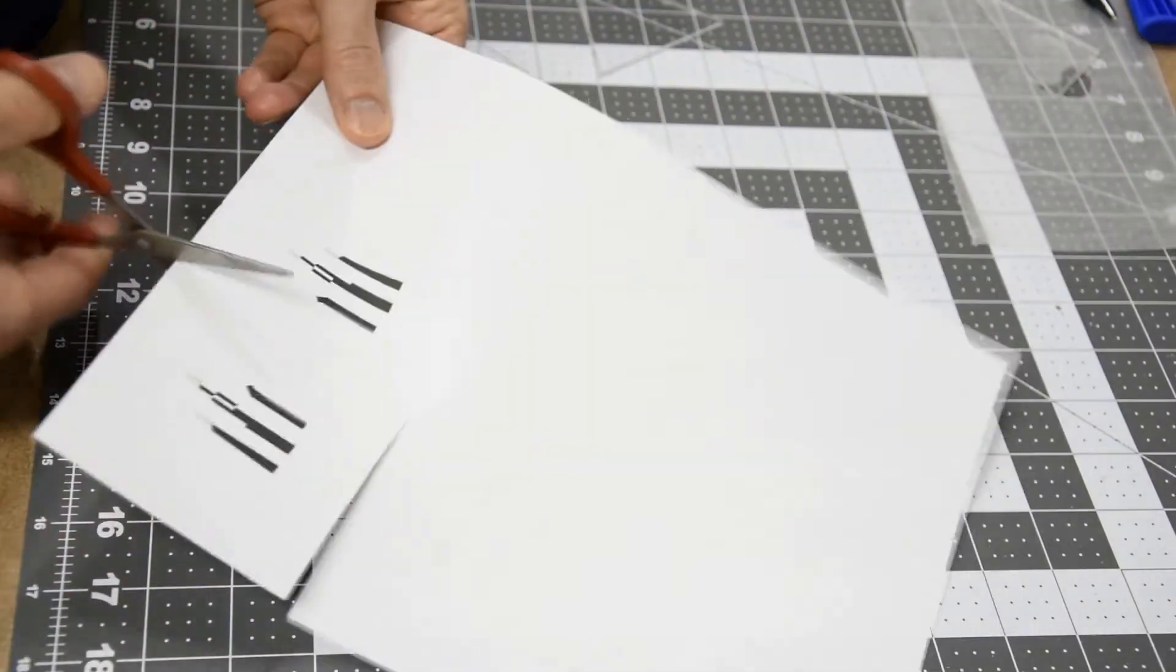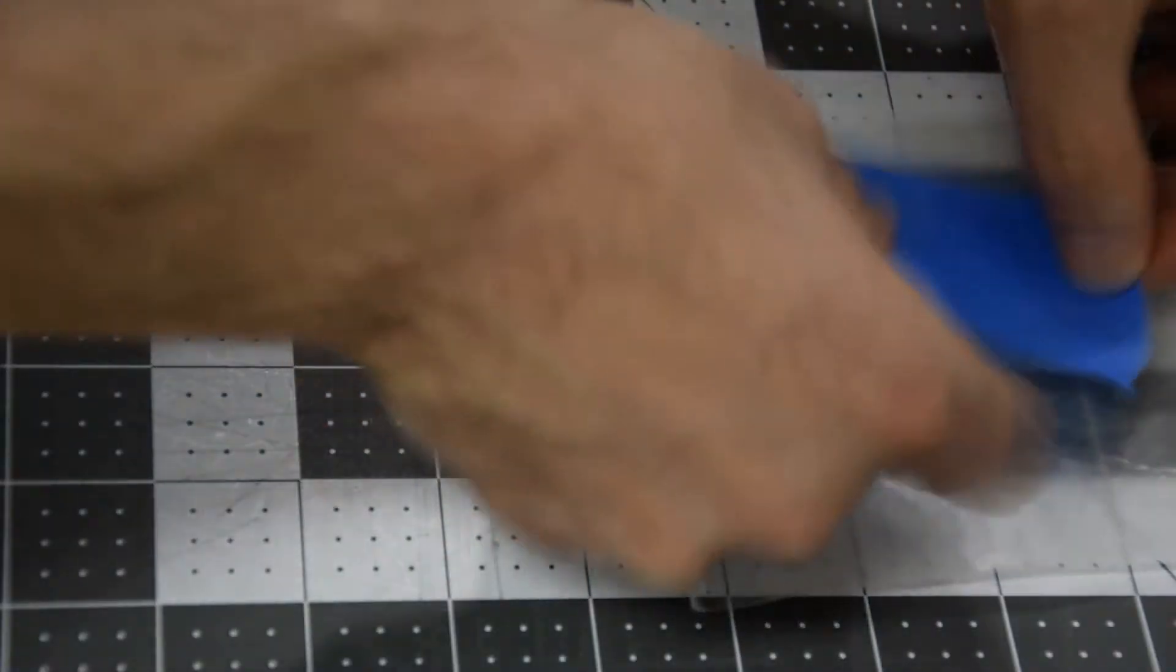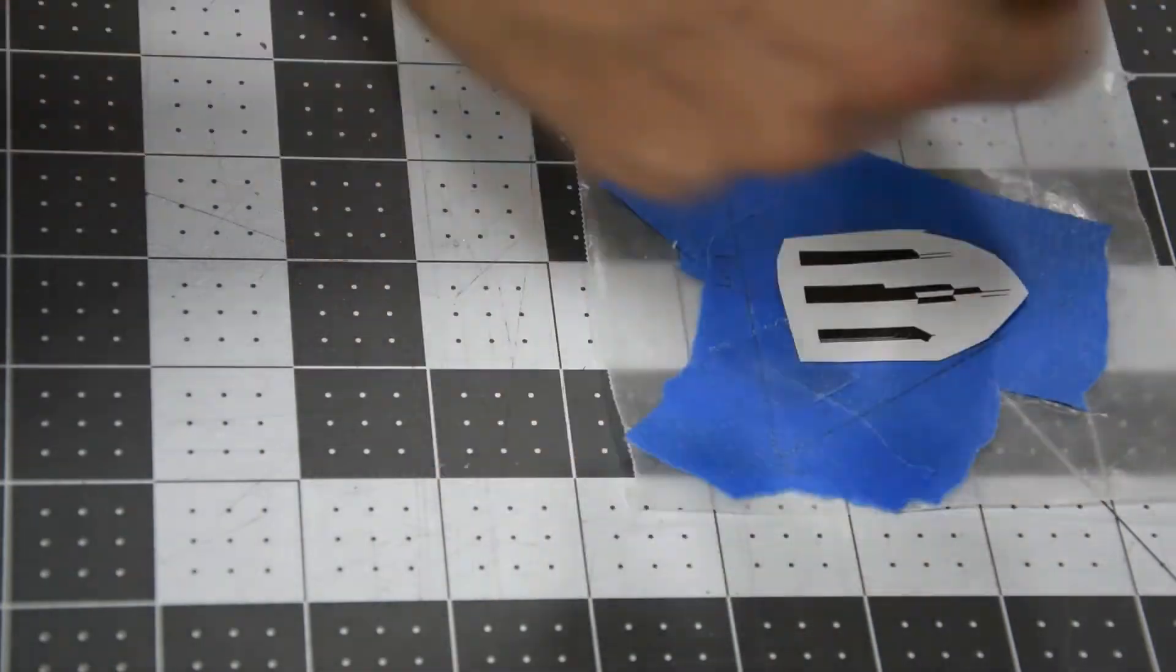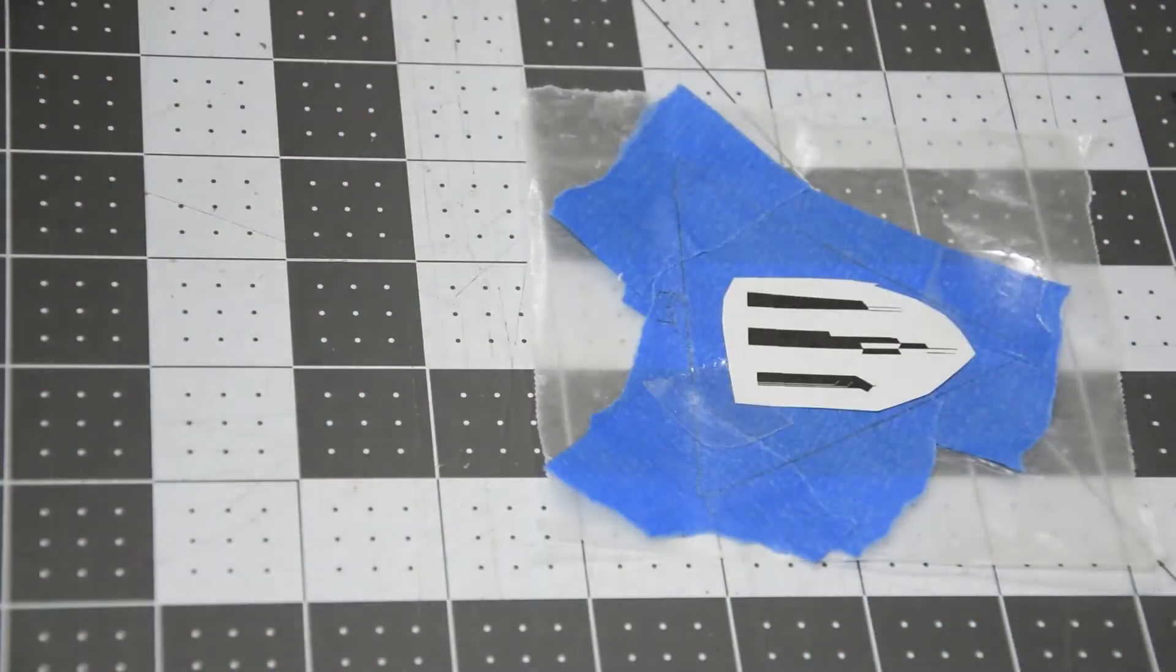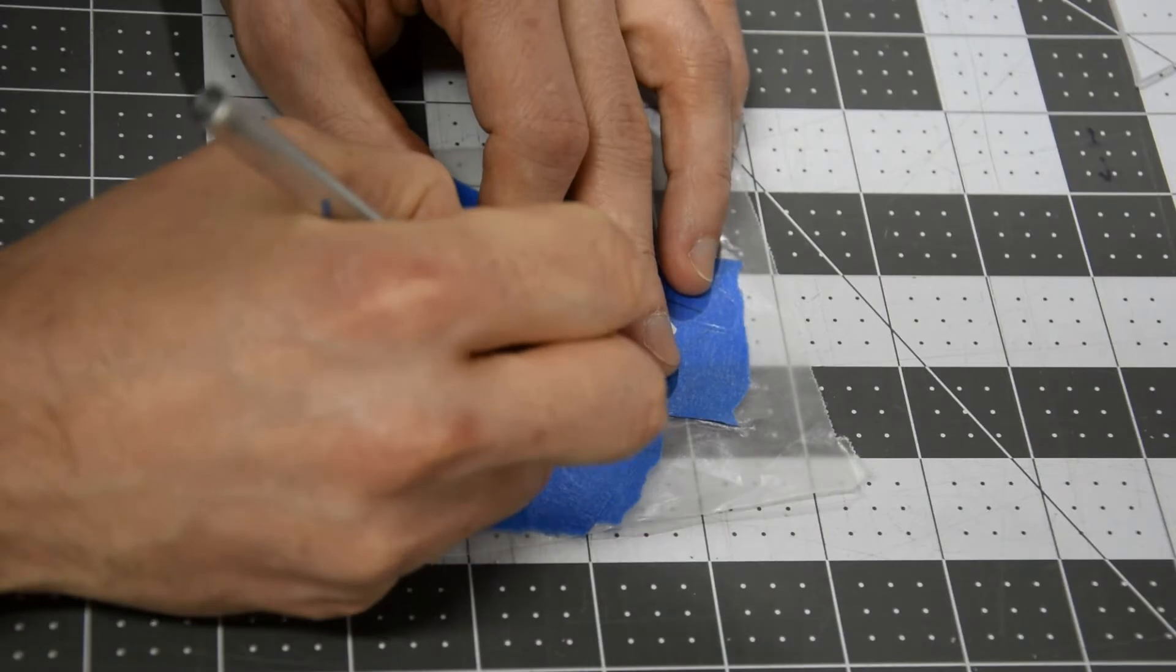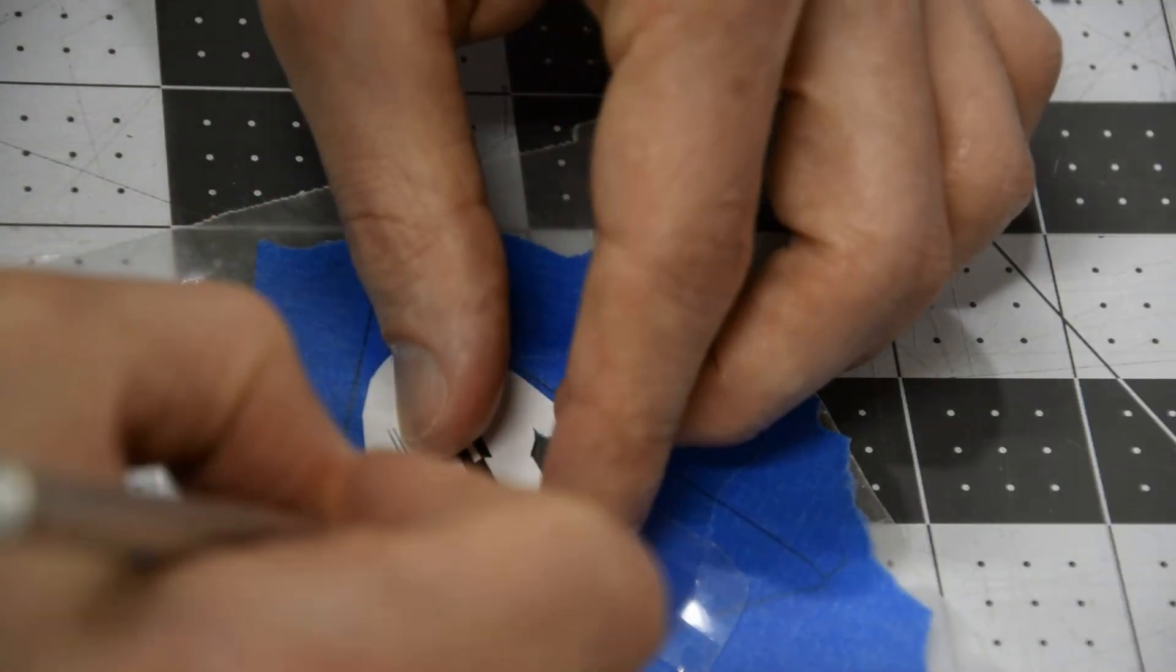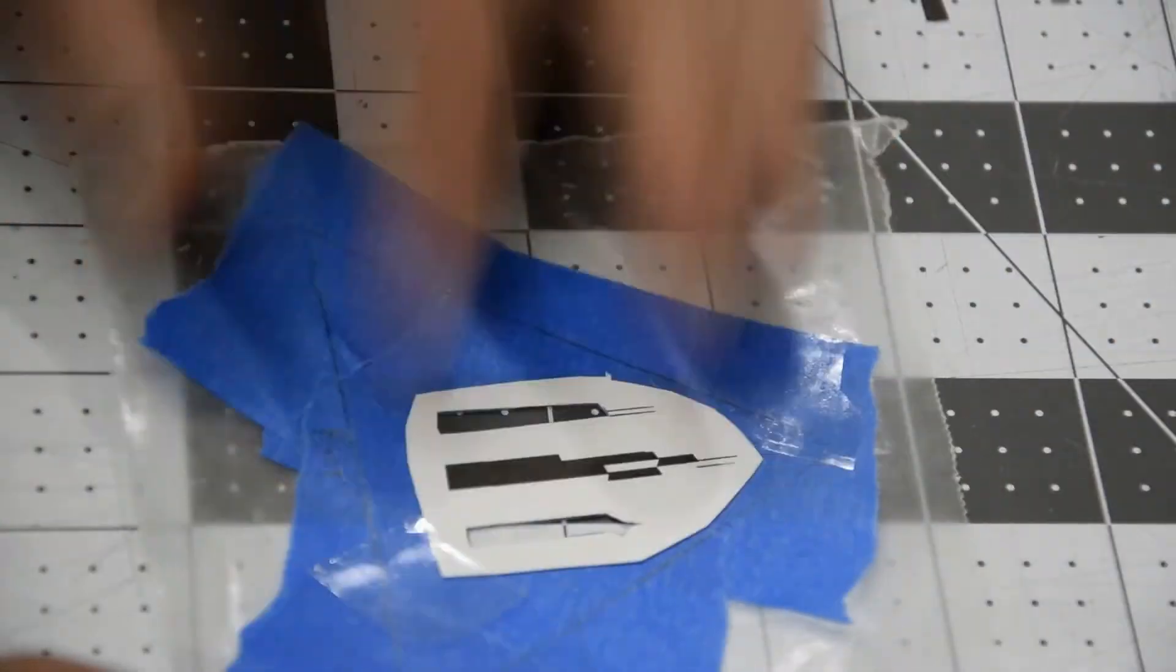In order to get the logo onto the piece of acrylic, I first printed out the logo at the right size. To transfer the logo, I put some masking tape on wax paper and then taped the logo on top of that. Using an exacto knife, I cut out the parts of the logo that I wanted to appear on the acrylic, making sure to cut all the way through the wax paper on the bottom.